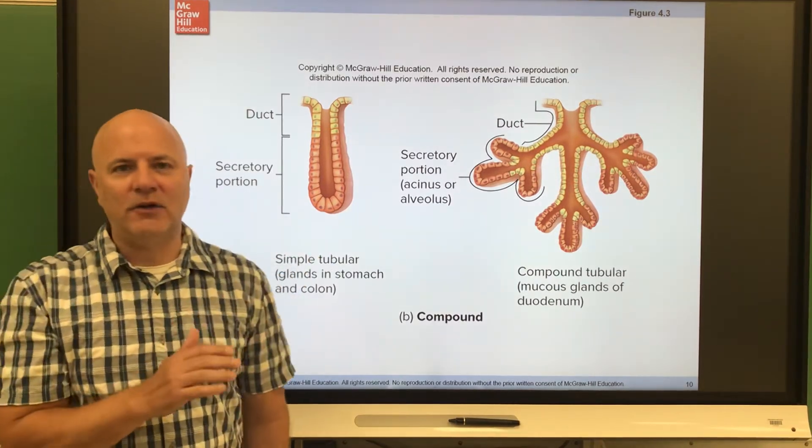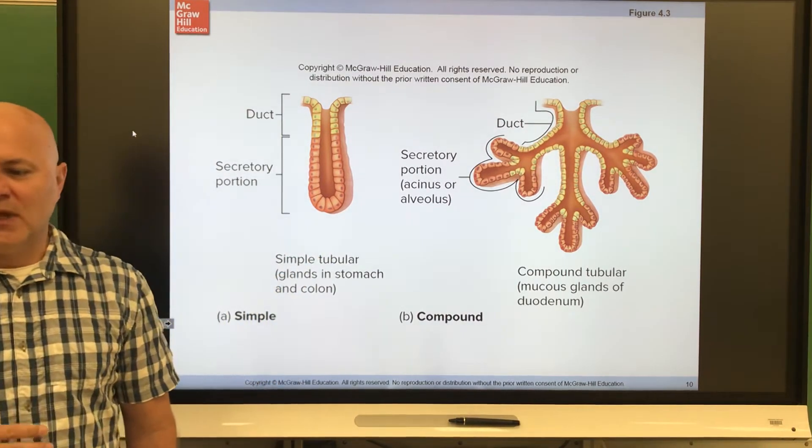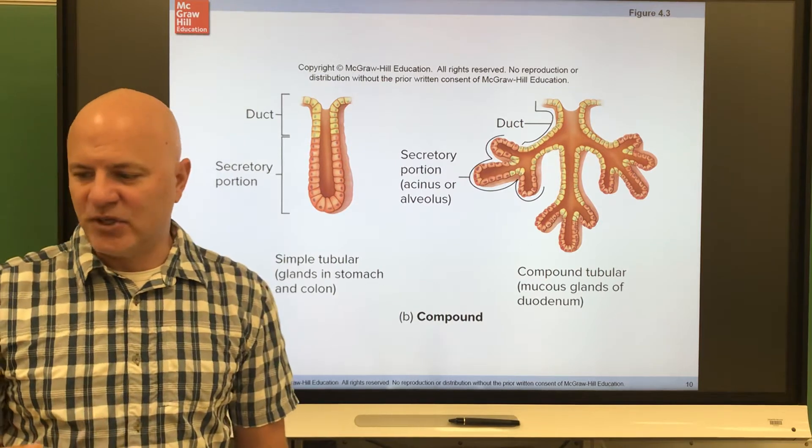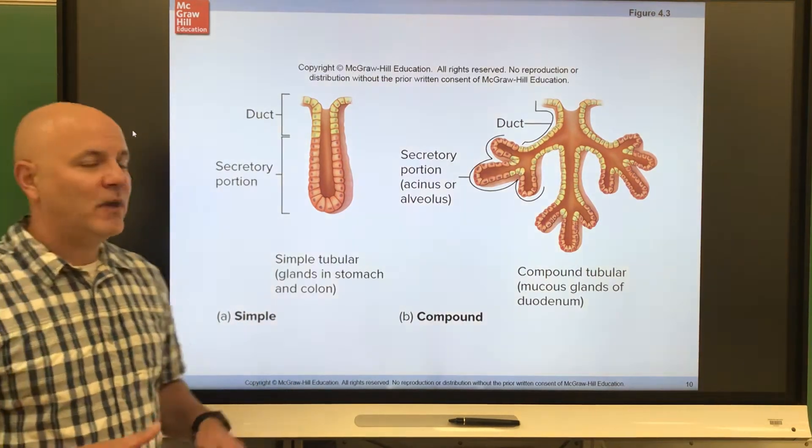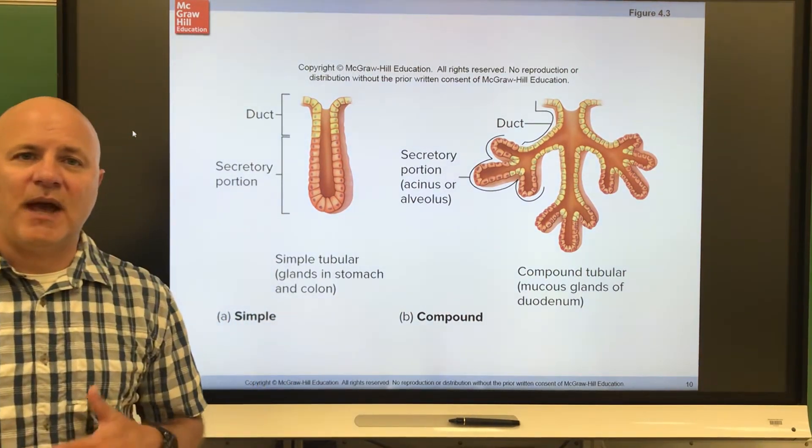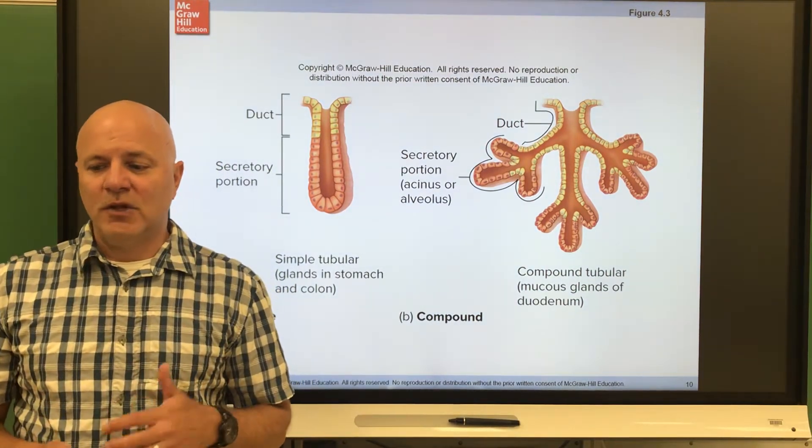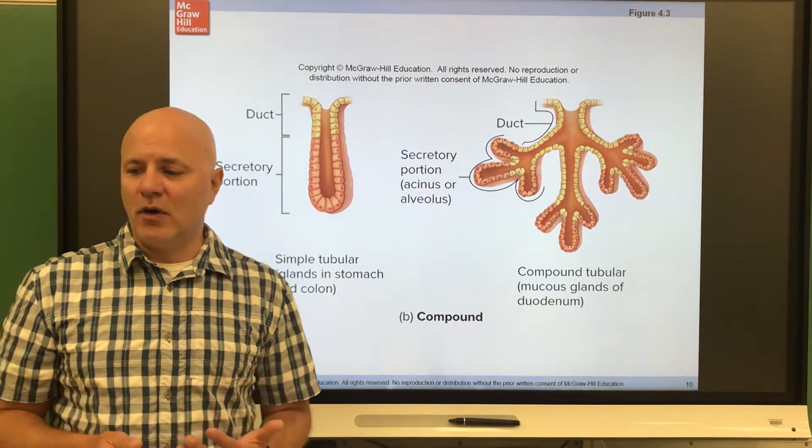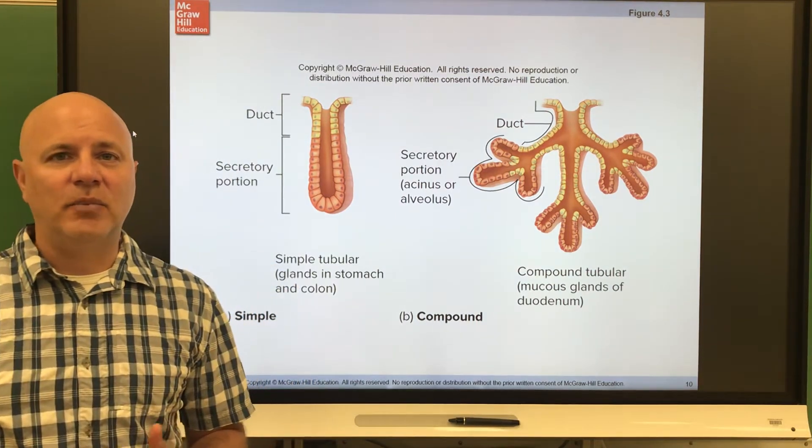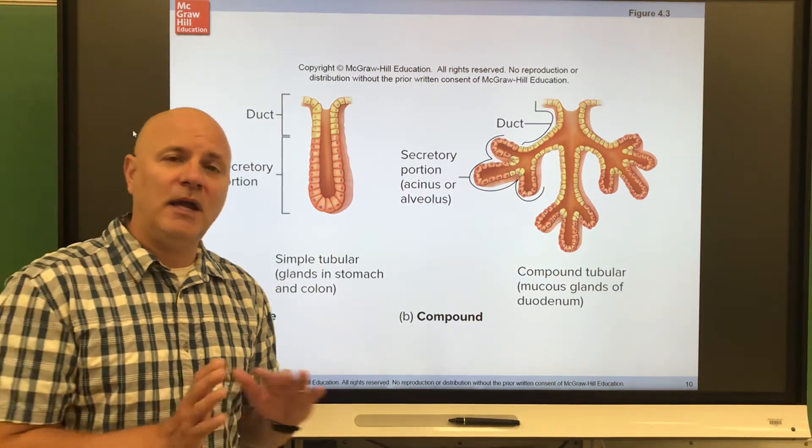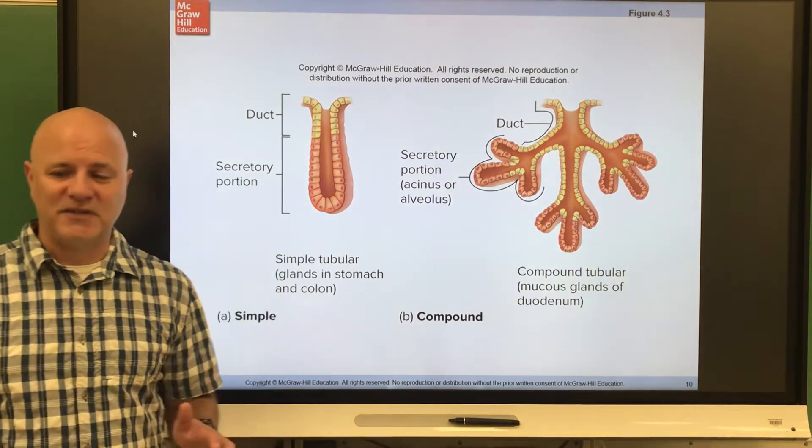But I'm going to go here to glandular epithelium or glands. So a gland is an organ specialized to secrete substances. There are two major types of glands that we have in our body. One are endocrine glands and the other are exocrine glands. So endocrine glands are glands that secrete hormones directly into the blood. We'll talk about endocrine glands later on this semester.